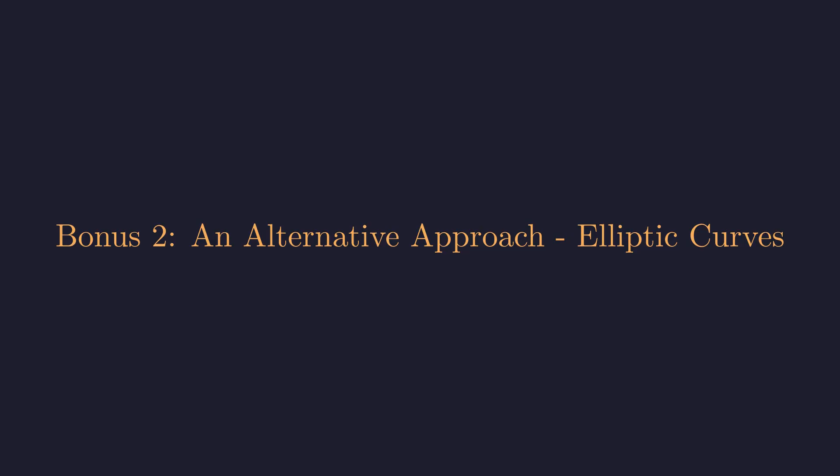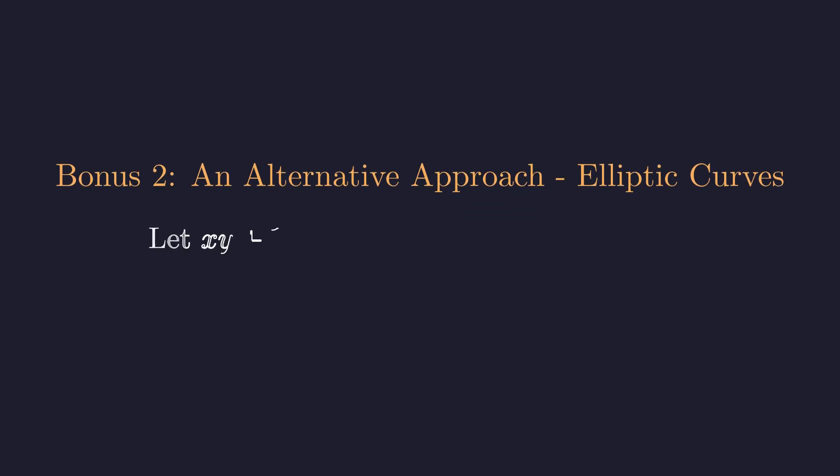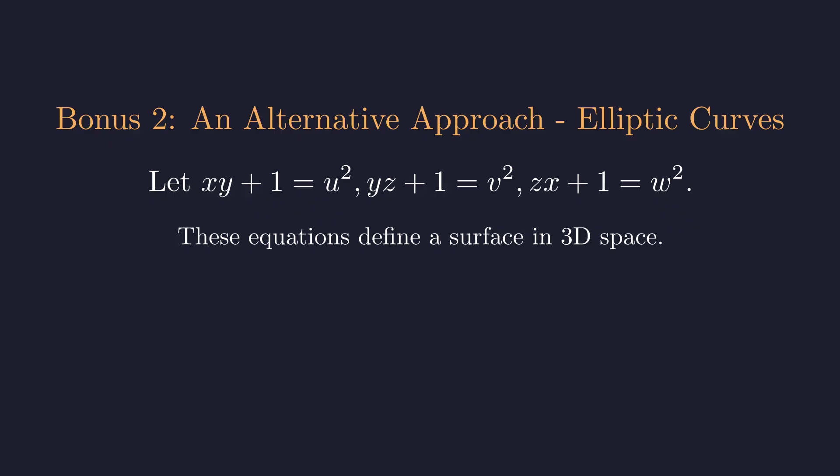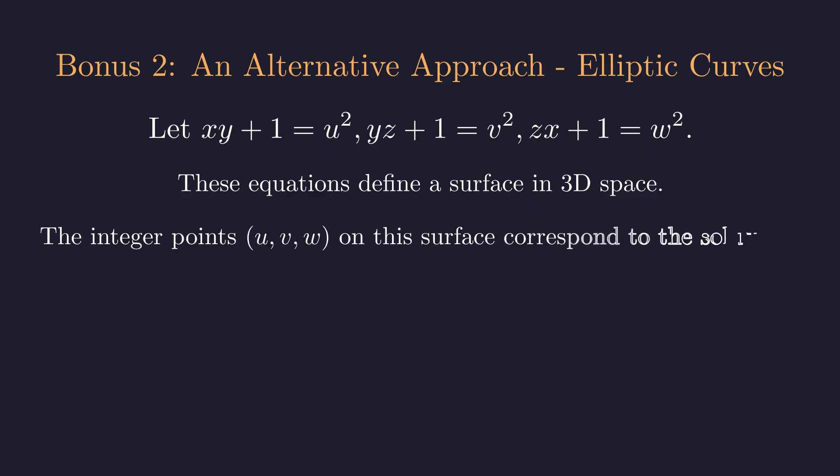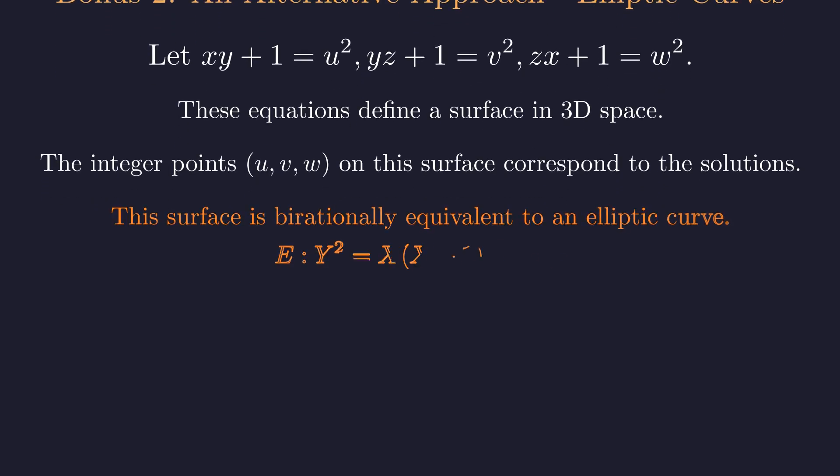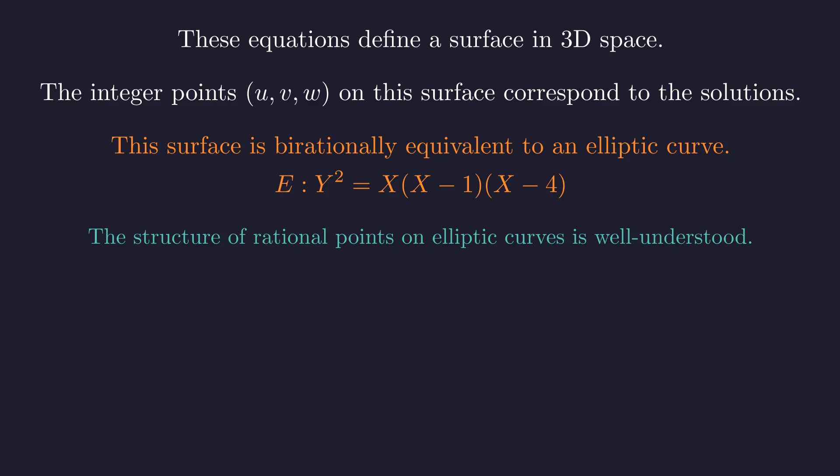Now, if you want a taste of how modern mathematicians think about problems like this, there's a completely different perspective using something called elliptic curves. We start with the same setup. All three factors are perfect squares. These three equations carve out this intricate geometric surface in higher dimensional space. Finding our integer solutions is equivalent to finding special points called rational points on this geometric object. Through some deep algebraic geometry, it turns out this surface is intimately connected to something called an elliptic curve, which has this particular equation. What's incredible is that the rational points on an elliptic curve form what's called a group. They have this beautiful algebraic structure. By understanding this group, mathematicians can classify every possible solution to our original problem. It's a completely different approach that reveals the deep connections running throughout mathematics.